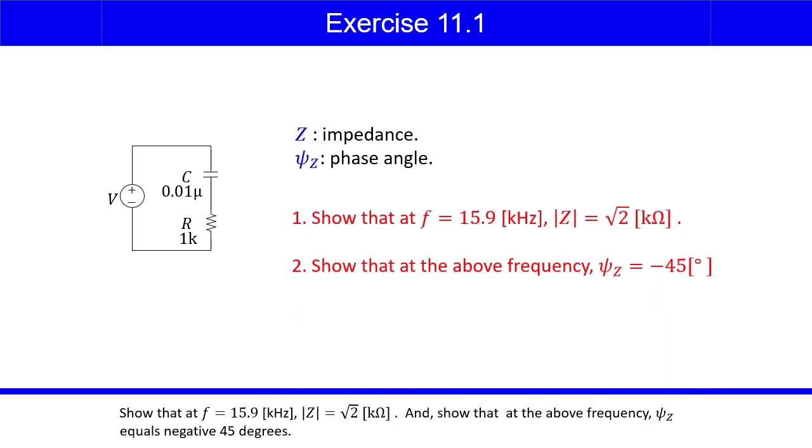Show that, at f equals 15.9 kilohertz, the magnitude of Z equals square root 2 kilo-ohms. And show that, at the above frequency, psi Z equals negative 45 degrees.